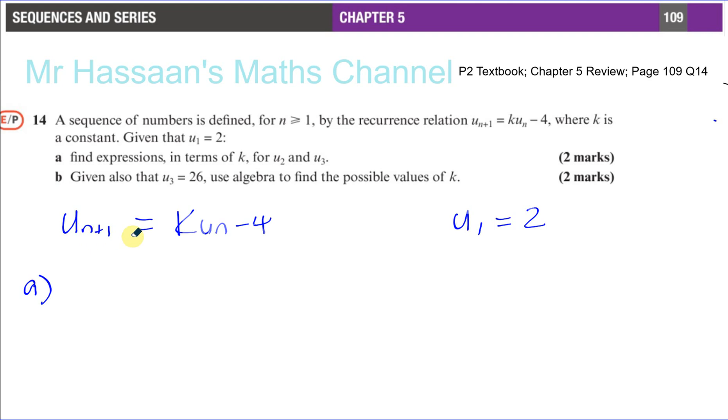To get to the next term up, you multiply k with the term before the term you need and take away 4. So if we want to find u 2, we need to know what u 1 is, and we do. So we have k times u 1. So u 2 will be k times u 1 minus 4, which is k times 2 minus 4. So we can say u 2 is equal to 2k minus 4.